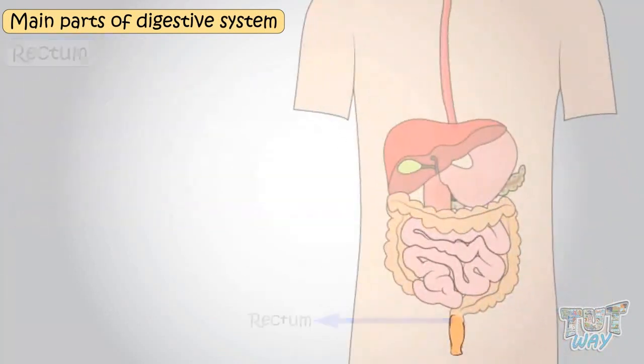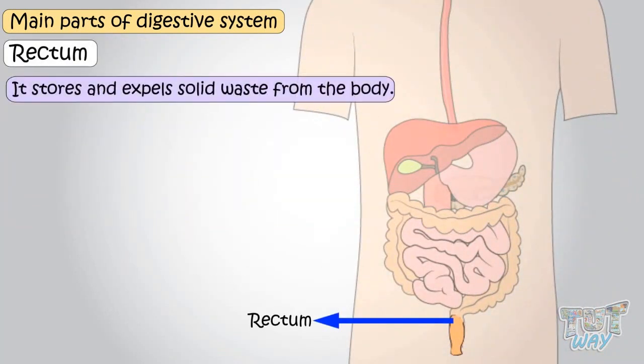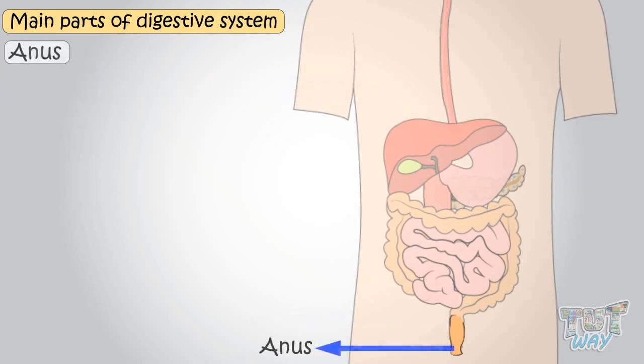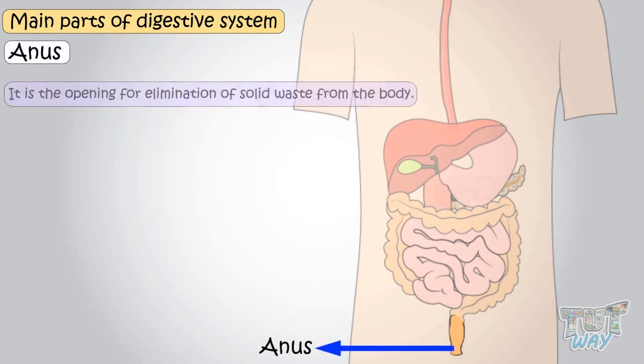Rectum — it stores and expels the solid waste from the body in the form of feces. Anus — it is the opening for the elimination of solid waste from the body.